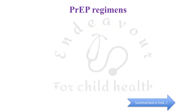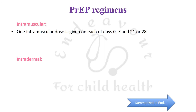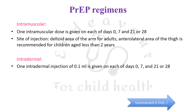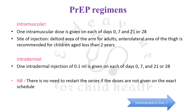PrEP regimens can be intramuscular or intradermal. For intramuscular PrEP, one intramuscular dose is given on each of days 0, 7, and 21 or 28; the injection site is the deltoid area in adults and the anterolateral thigh for children less than two years. For intradermal PrEP, 0.1 ml is given on the same schedule — days 0, 7, and 21 or 28. There is no need to restart the series if doses are not given on the exact dates.